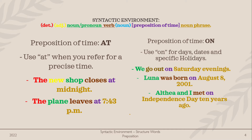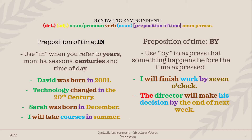The preposition 'on' is used for days, dates, and specific holidays. For example, 'We go out on Saturday evenings.' The preposition 'in' is used when you refer to years, months, seasons, centuries, and time of day. For example, 'David was born in 2001.' Another example: 'I will take courses in summer.' In this sentence, there is another noun after the verb.